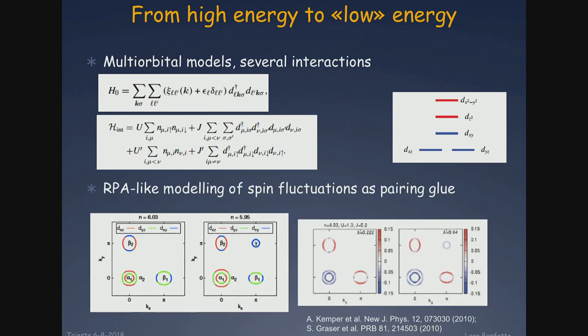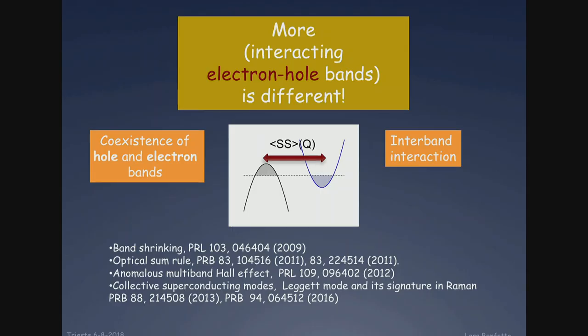For example, you can start from effective low-energy models which fit more or less the squeezed bands, compute spin fluctuations at the RPA level, and this gives your starting model. You can compute the pairing symmetry coming from the spin fluctuations and get a good description of the gap symmetry and the S+/- order parameter — good both on a qualitative and quantitative level. This is the reason why I say this low-energy model works, with some remarkable exceptions that I will discuss later, in particular for iron selenium.